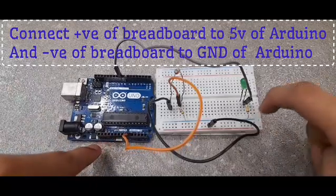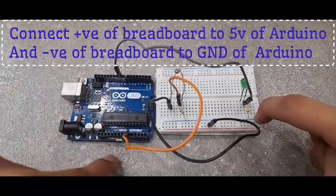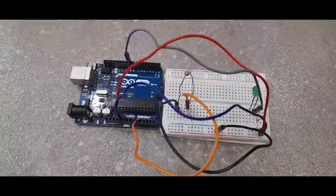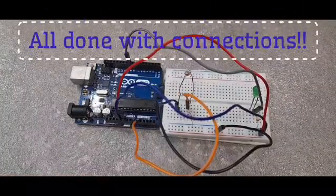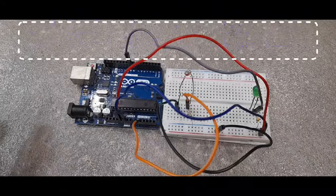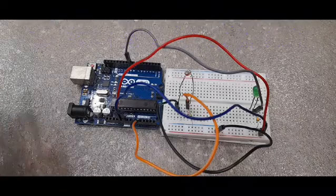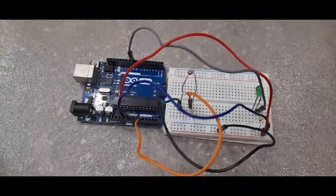Okay guys, now we are all done with our connections. You just have to code it, and then your photo resistor will be ready. The code will be given in the description below, so check it out.